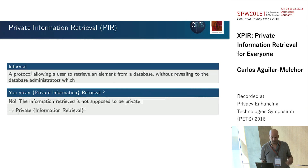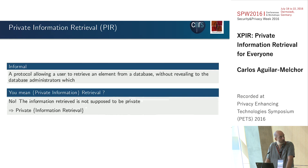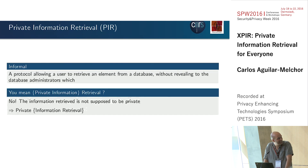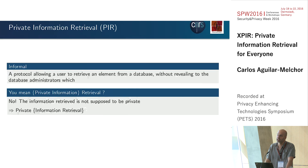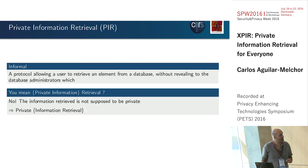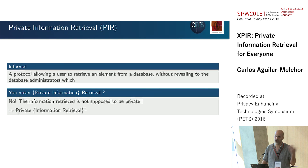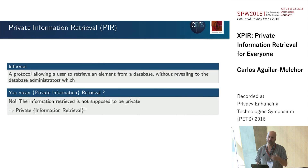Let's start with the introduction. We are interested in Private Information Retrieval, or PIR. The idea is about hiding a user's choice. There is a database and the user wants to hide his access pattern. The choice is private, not the data. The database can be public — DNS records, public keys, movies, whatever. It's the choice of the user that is private.